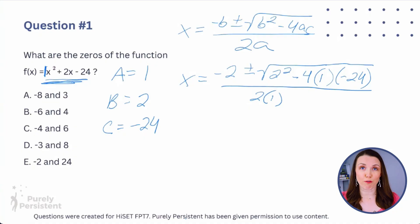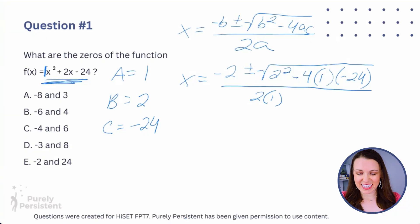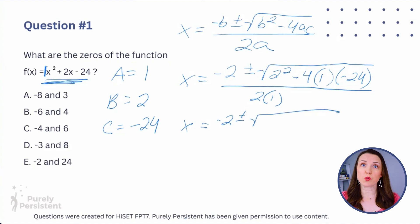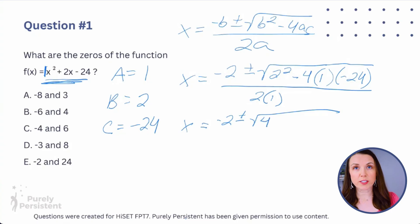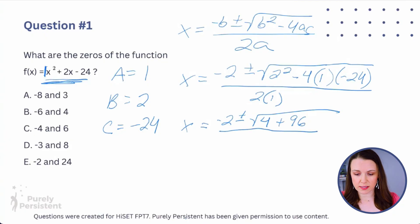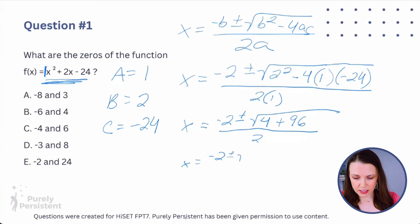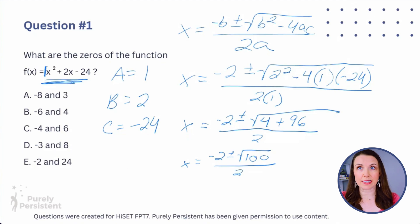Remember your order of operations — PEMDAS. So: 2² = 4. Then -4 × 1 = -4, and -4 × -24 = +96. So under the radical I have 4 + 96 = 100, all over 2×1 = 2. The square root of 100 is 10 — because 10 × 10 = 100. So now I have x = (-2 ± 10) / 2.